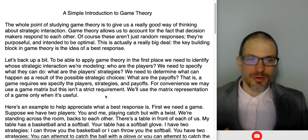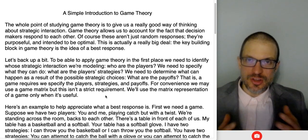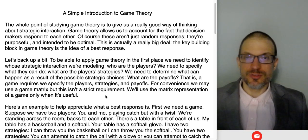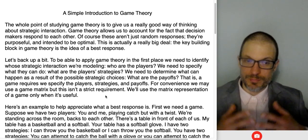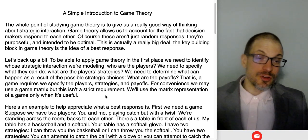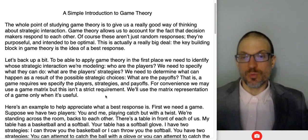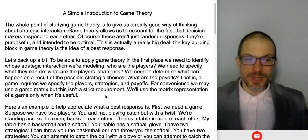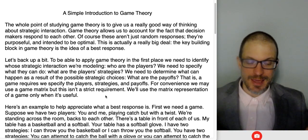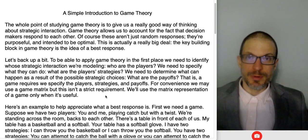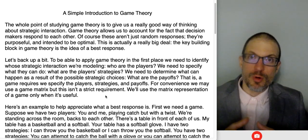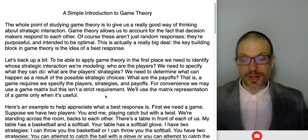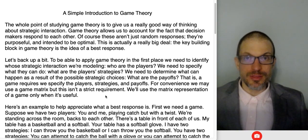The idea with game theory is we're trying to capture strategic interdependence. To model a situation as a game, you've got to have a set of players — basically who's in the game — a set of strategies, what they can do, and then payoffs, what can happen. If we have players, strategies, and payoffs, we can write down a game. Usually we'll think about the game as being represented concisely in a matrix form or in a game tree form, although we can also see games that don't rely on either.